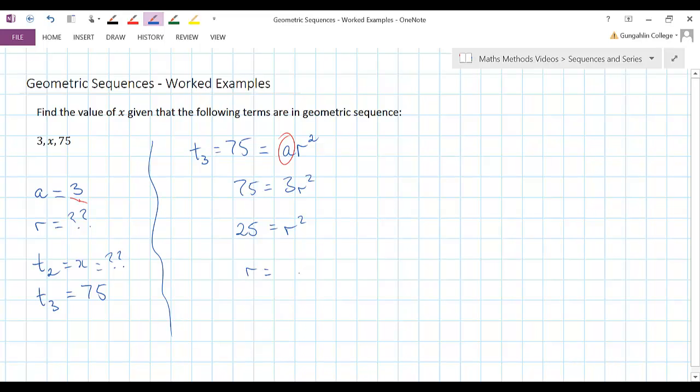And we have to be careful here, I actually have to take the plus and the minus square root. So minus 5 or 5 are both options for the common ratio, I don't know whether x is positive or negative, so either of these could be a possibility.